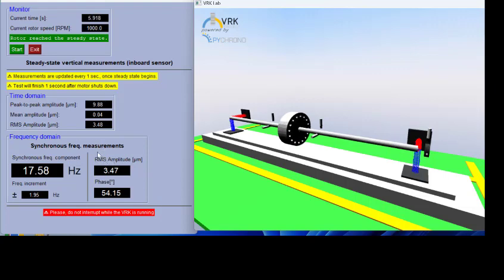And now it calculated the amplitude. Please note that the amplitude that the software calculates is RMS amplitude in microns and is 3.47. The phase angle is 54.15. Please note that the 16.67 hertz is equivalent to the 1000 rpm that we set up our run. Now the system is deaccelerating and eventually will stop. Now you see how the rotor is almost stopped. And we finish this round.